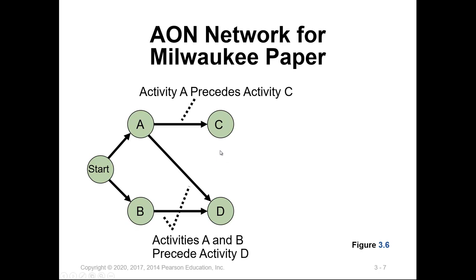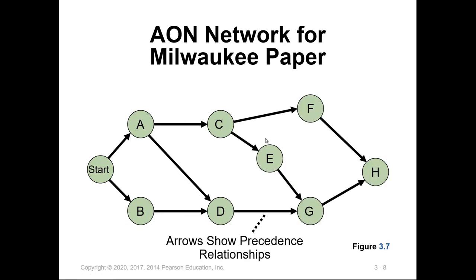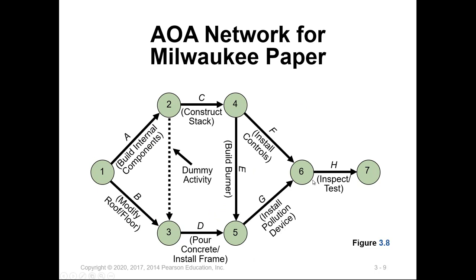Activity A should be completed to start activity C, while we need to complete both A and B to start activity D. Once we complete activity C, we can start E and F. Once we complete D and E, we start activity G. Once F and G are completed, we can start activity H. This diagram shows the same example using the activity on the arrow approach, and we need to add a dummy activity to explain how we move from one activity to another.